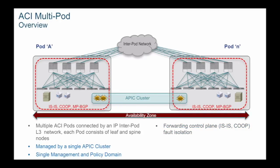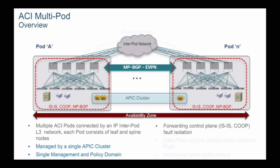The multipod fabric is managed by a single APIC cluster, making it a single management and policy domain that can be viewed as a single availability zone. Multipod uses multi-protocol BGP EVPN address family as the control plane protocol for advertising endpoint reachability across the entire multipod fabric. Tenant traffic is carried in VXLAN across the IP interpod network, and the VXLAN traffic carries end-to-end policy information, allowing policy enforcement across the entire multipod fabric.